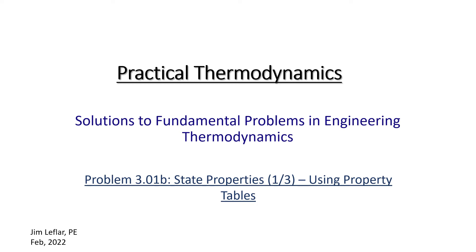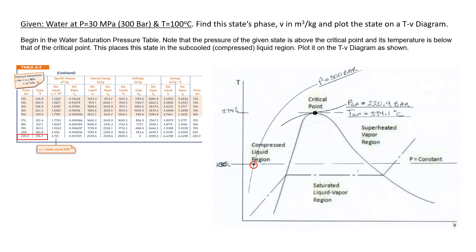Let's look at part B of this problem, where we're learning to use tables to find properties of states of thermodynamic substances. We have water at a pressure of 30 megapascals, which is 300 bar — the table is listed in bar — and a temperature of 100 degrees C. We want to find this state's phase, its specific volume, and plot it on a TV diagram.